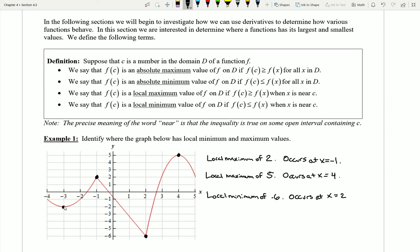Well, it should actually be over here at negative 3. And notice that again, if I look in a little window here, that seems to be the smallest value. So I can say there is a local minimum of, let's see, the y value here is negative 2, and it occurs at x equals negative 3.